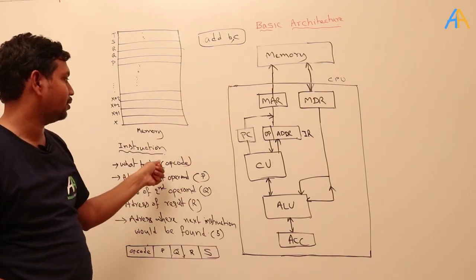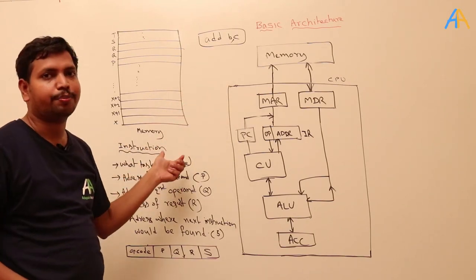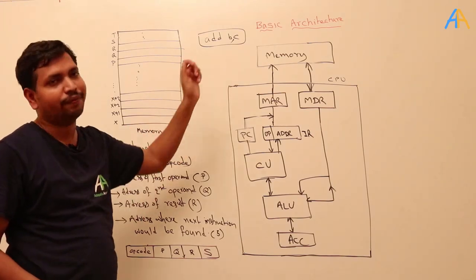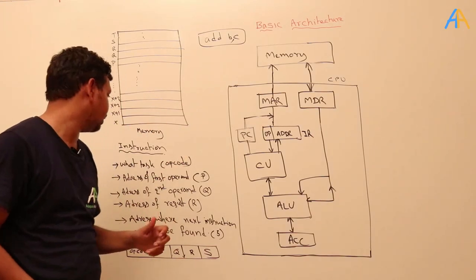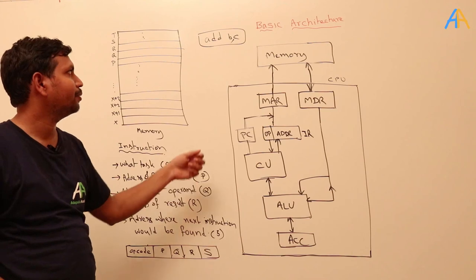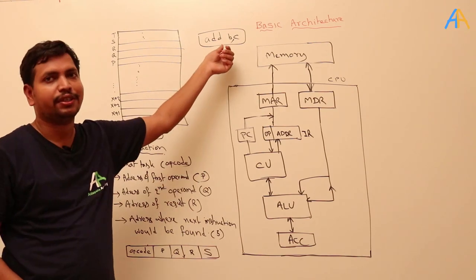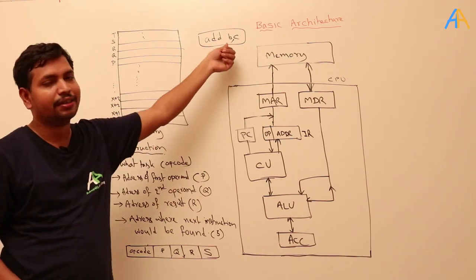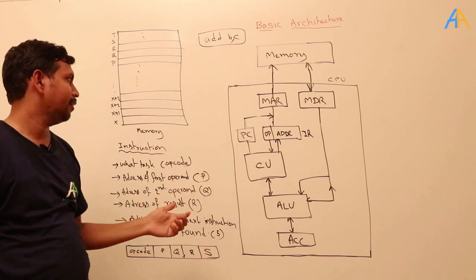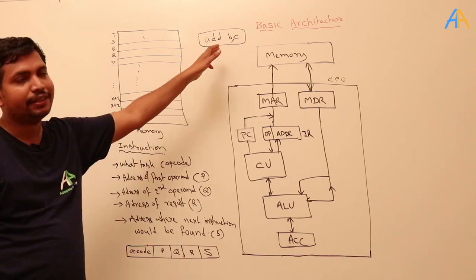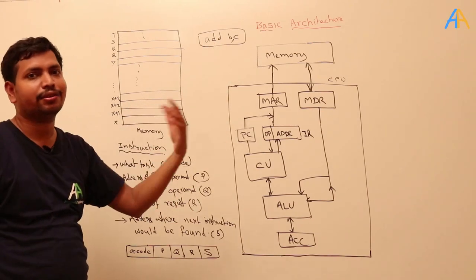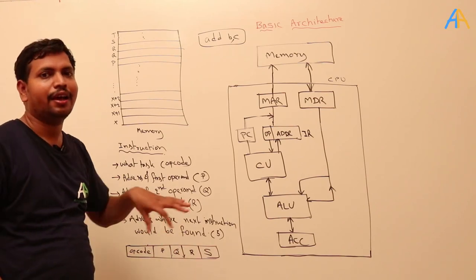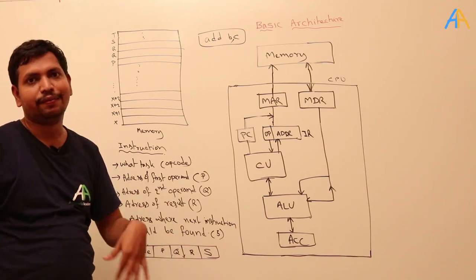That task is called the opcode. So an instruction should contain: first, what it has to do (the opcode); next, the address of the first operand — where it has to fetch the first data from; the address of the second operand — where it has to fetch the second data; and after the addition of B plus C, where it has to store the result.